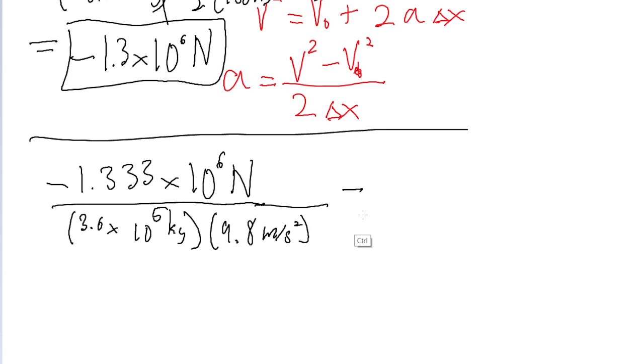If we put this into a calculator, and then we also want to multiply the whole thing by 100, in order to make it a percentage, then we find a percentage of about 39%. So the force is 39% of the weight of the train.